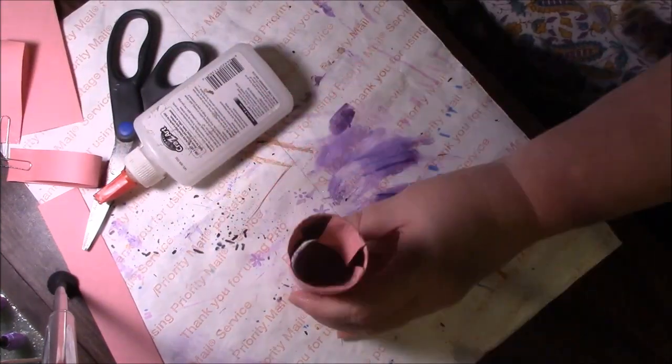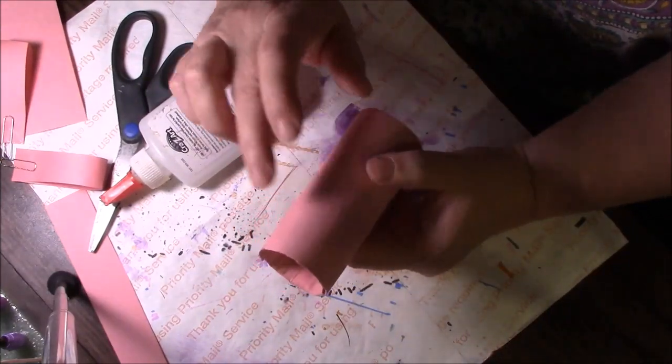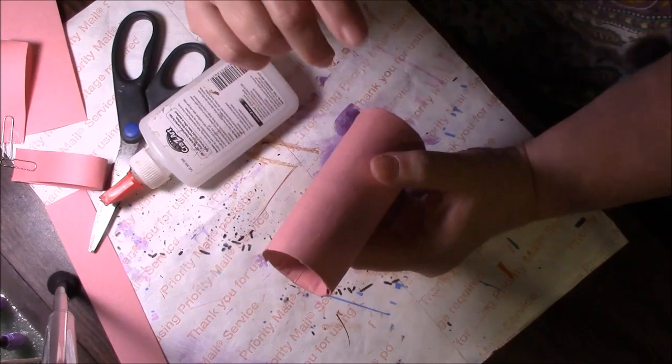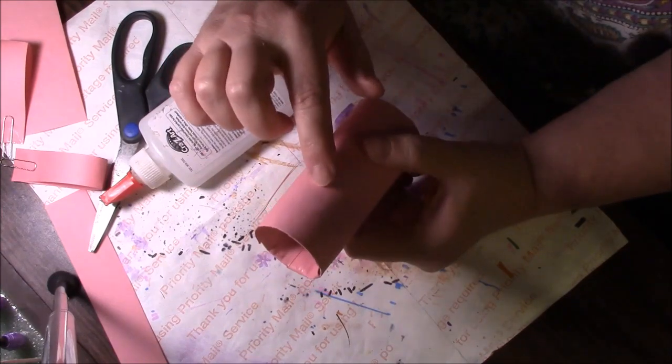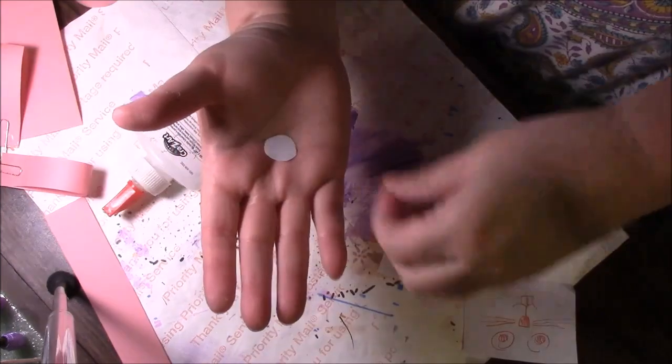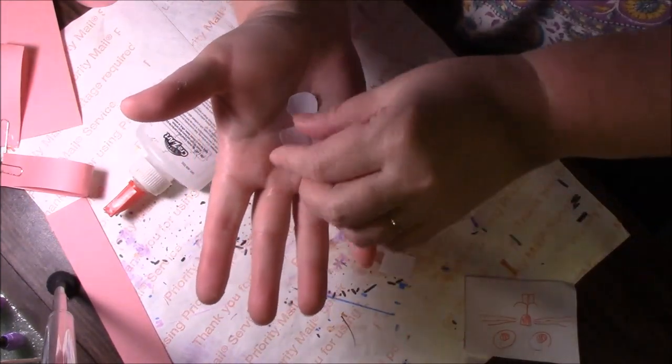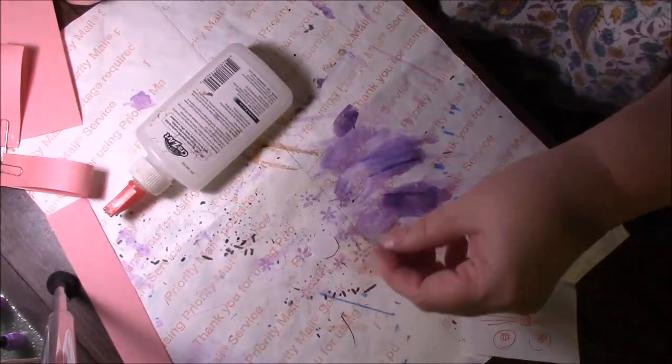Now we need a bunny face. If you have jiggly eyes from the craft store, you can use those. I don't, so I'm just going to cut some white circles and then I will do the rest of the face with some permanent markers. I just took a piece of scrap paper that I had. It's just regular copy paper and those are going to be for the eyes.